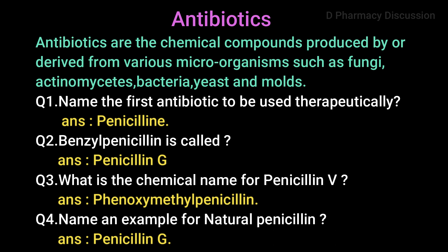Please note: penicillin G is benzyl penicillin, and penicillin V is phenoxymethyl penicillin. Other natural penicillins include penicillin O, penicillin K, penicillin X and penicillin F. Penicillin O is allyl mercaptomethyl penicillin. Penicillin K is N-heptyl penicillin, penicillin X is P-hydroxy benzyl penicillin, and penicillin F is 2-pentenyl penicillin.